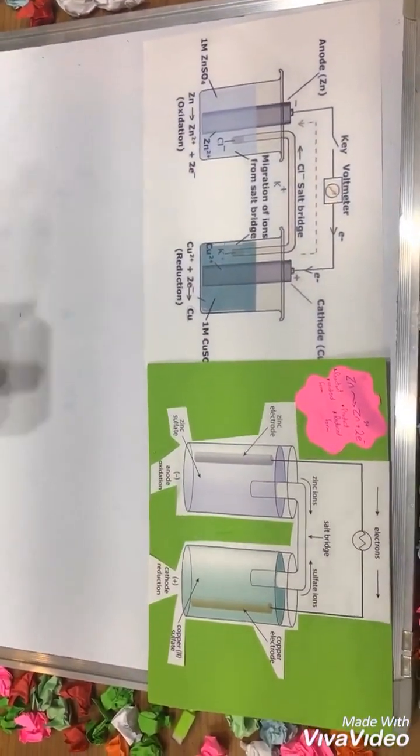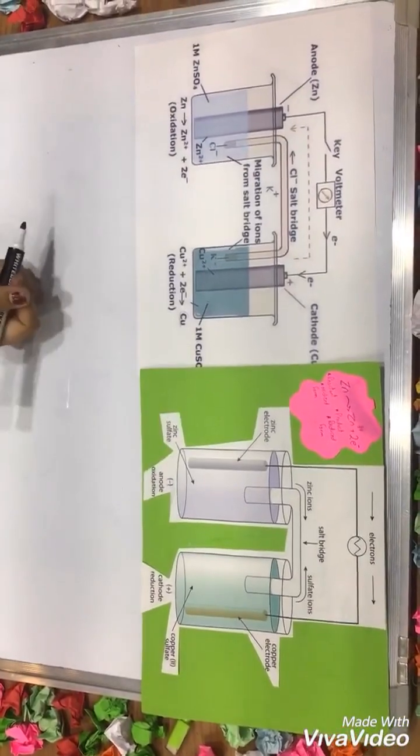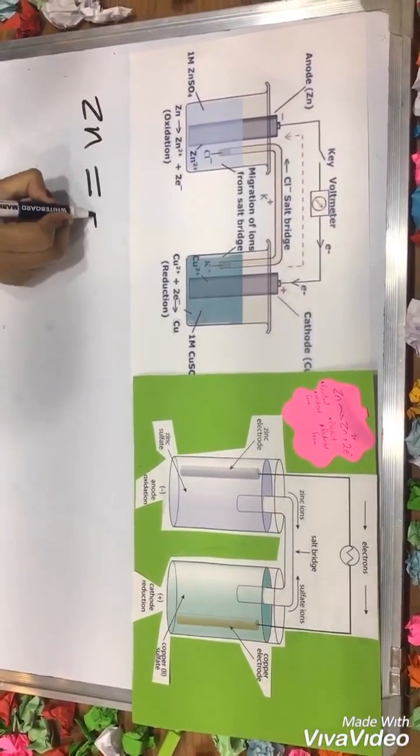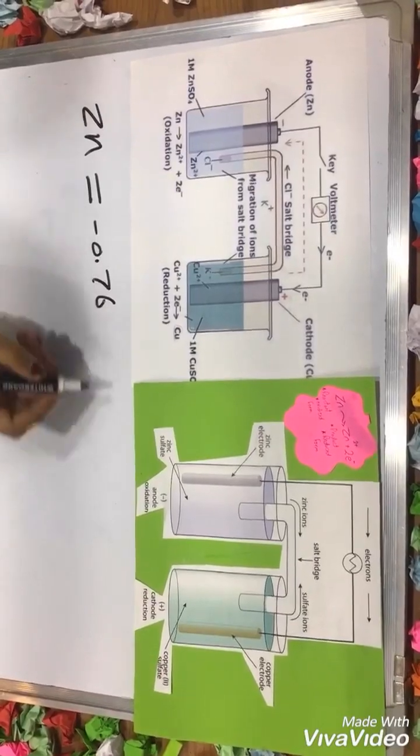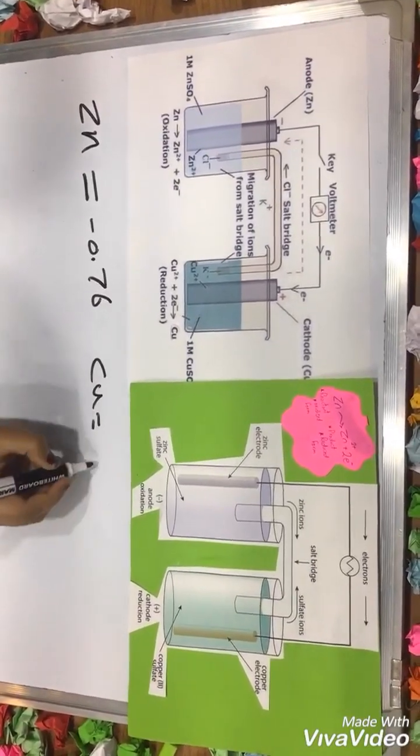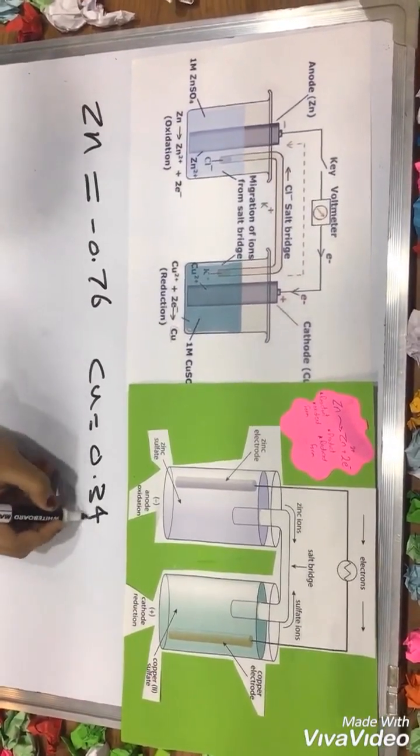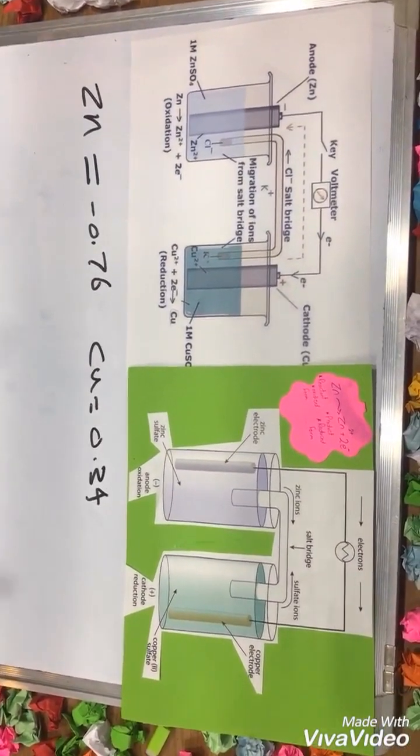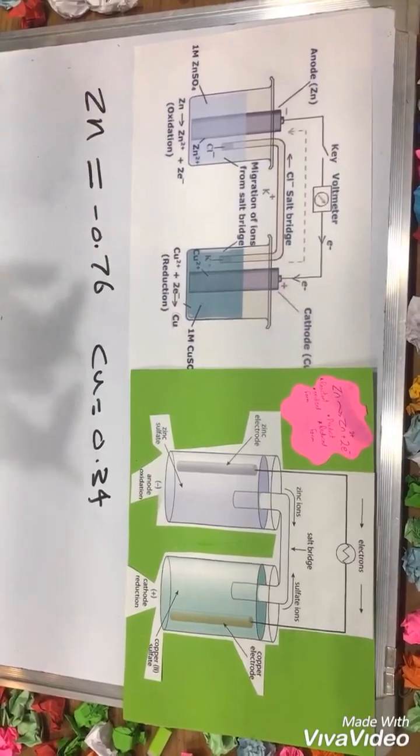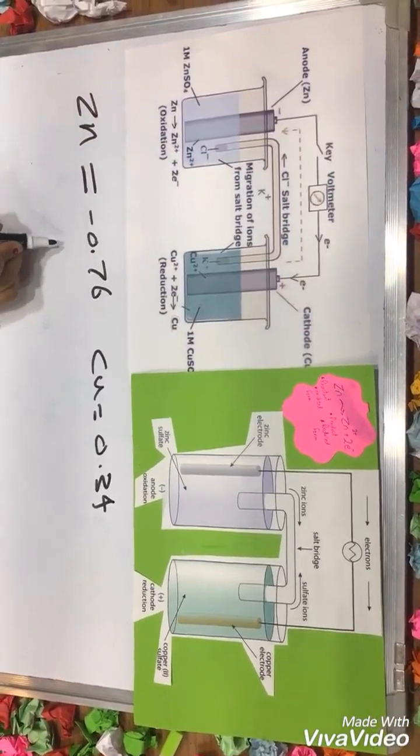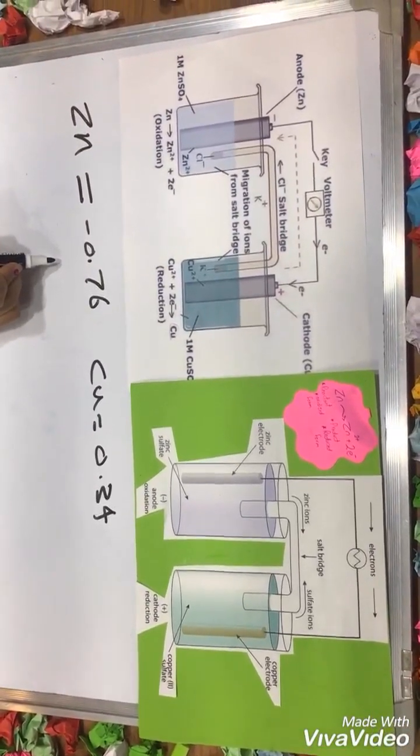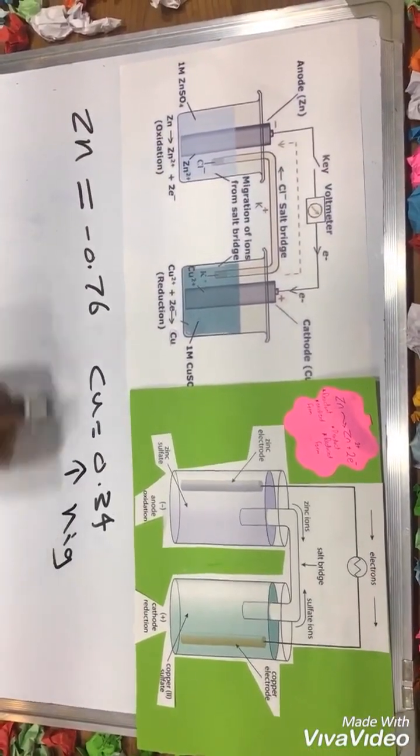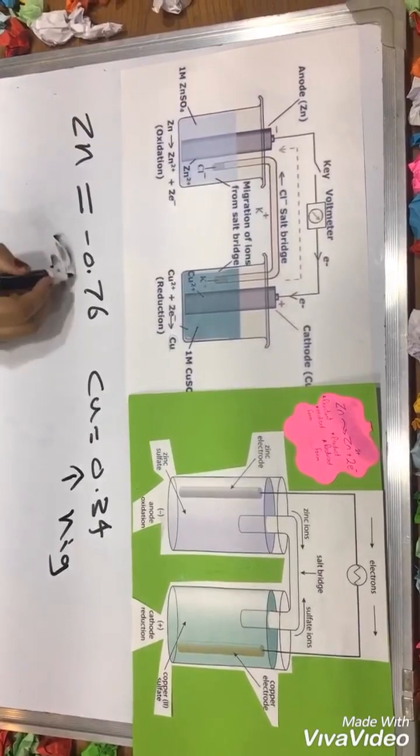Now we will explain an example like zinc. Its electrode potential is negative 0.76. And copper, its electrode potential is 0.34. To know which will be reduced or be oxidized, we will compare between electrode potentials. Here, the electrode potential is high, and here the electrode potential is low.